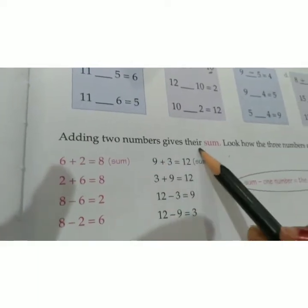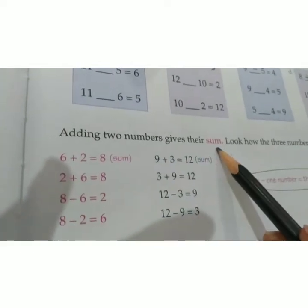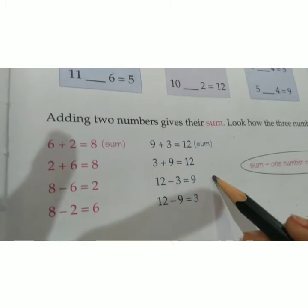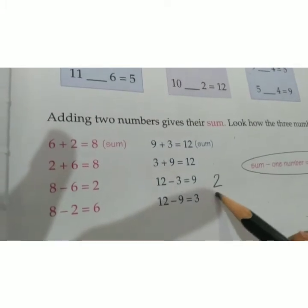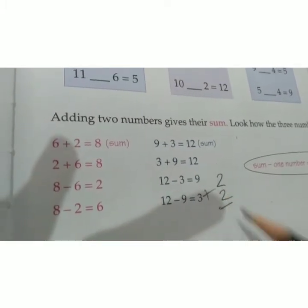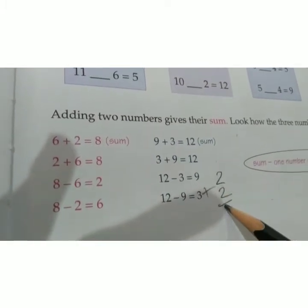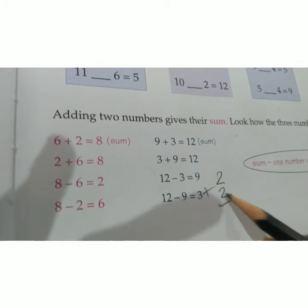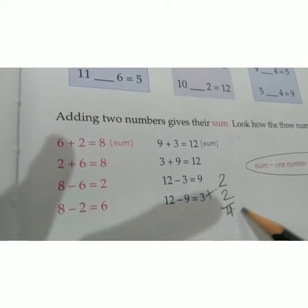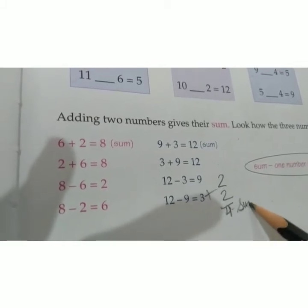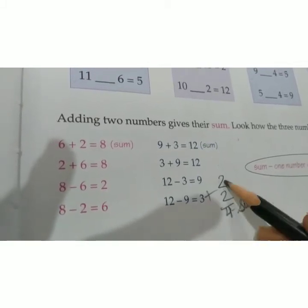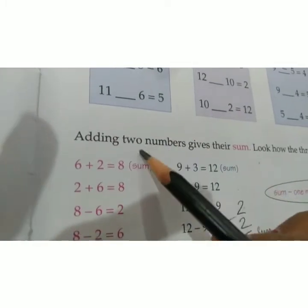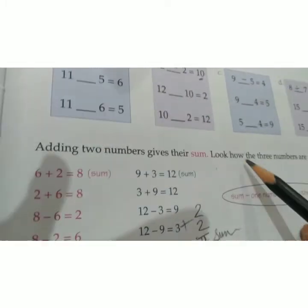Adding two numbers gives their sum. For example, 2 plus 2 equals 4. So 4 is the sum of 2 plus 2. Adding two numbers gives their sum.